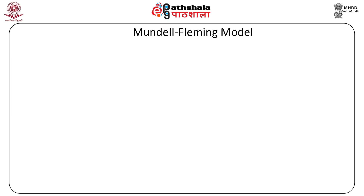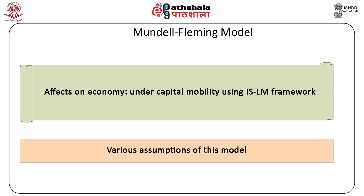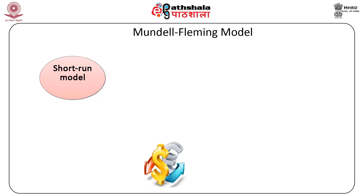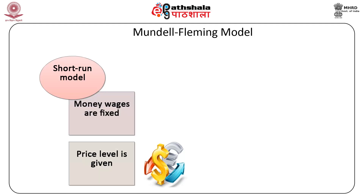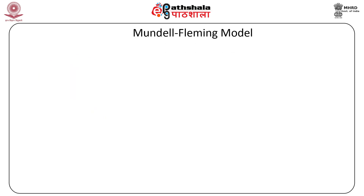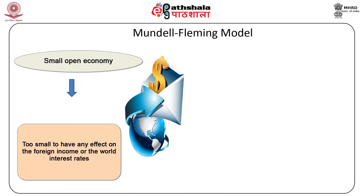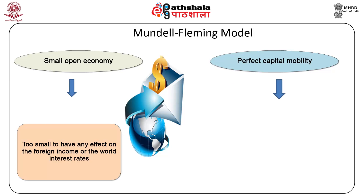The Mundell-Fleming model shows how the economy is affected under capital mobility using the IS-LM framework. This is a short-run model where the economy is operating below its full employment level of output. Money wages are fixed and the price level is given. Balance of trade — trade in goods and services — depends only on income and exchange rates. It is assumed that the Marshall-Lerner elasticity conditions are satisfied and there is no J-curve effect. The main assumption is that the economy is a small open economy, too small to have any effect on foreign income or world interest rates. Under perfect capital mobility, domestic securities are considered to be perfect substitutes of foreign securities, and hence domestic interest rates are equalized to world interest rates.